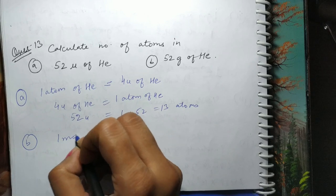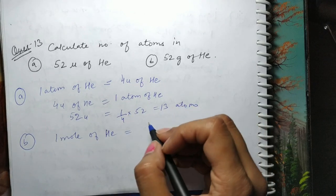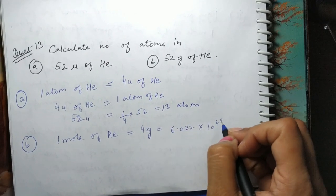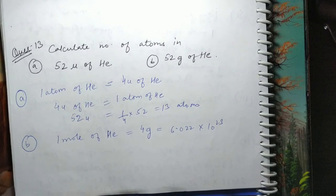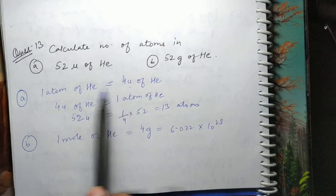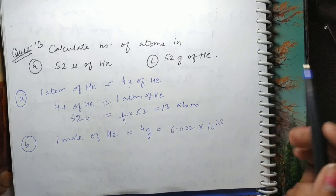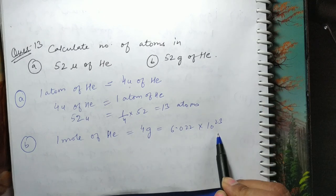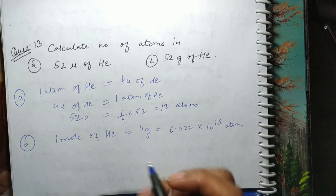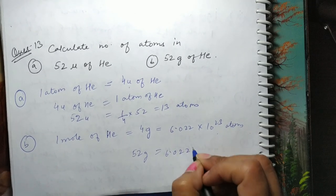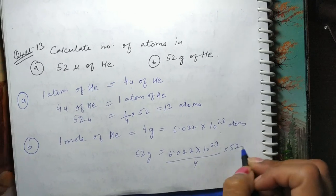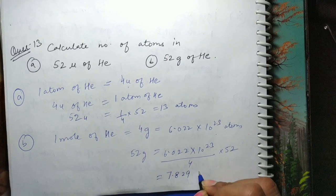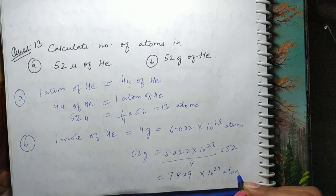Part (b): 1 mole of helium = gram atomic mass = 4 gram, and contains Avogadro's number of atoms. So 4 gram = 6.022×10²³ atoms. To 52 gram mein = (6.022×10²³ ÷ 4) × 52 = 7.829×10²⁴ atoms. Pehle case mein Avogadro's number ka koi role nahi tha kyunki atomic mass unit directly atom se correlate hoti hai.